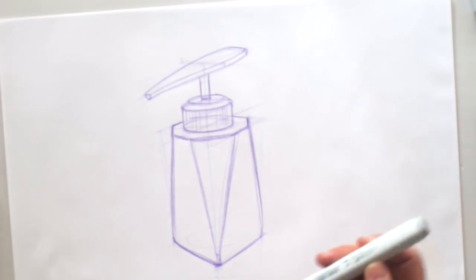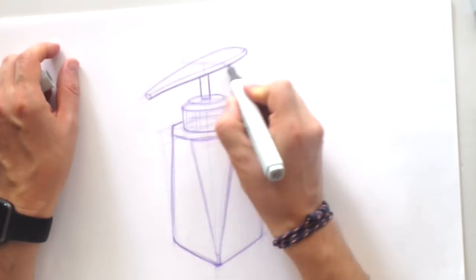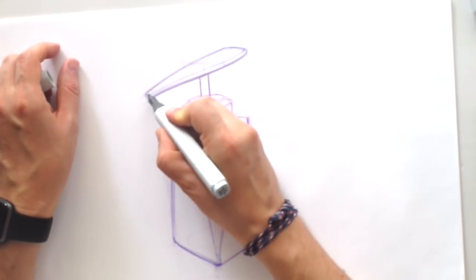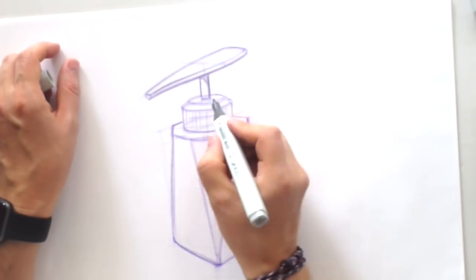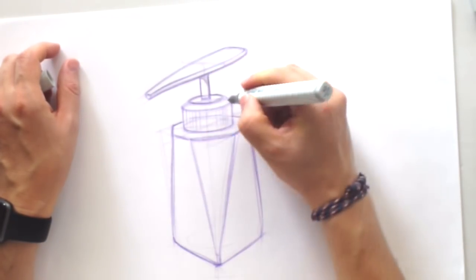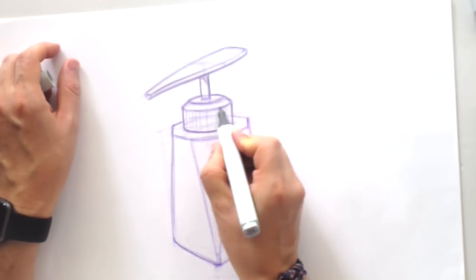Okay, so we have a general shape. Now let's start to make it more clear lines. Here I'm using the Copic marker, the thin part of the marker. To adjust those lines,